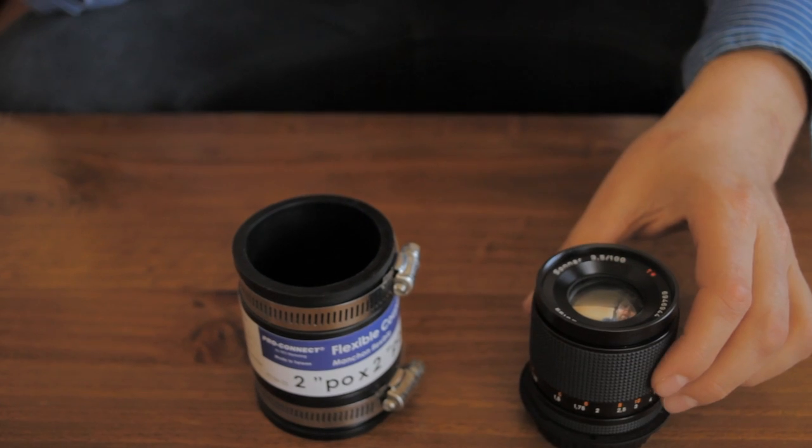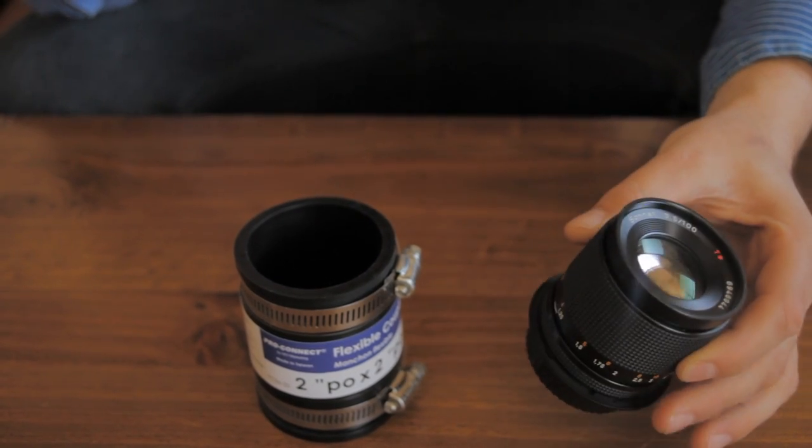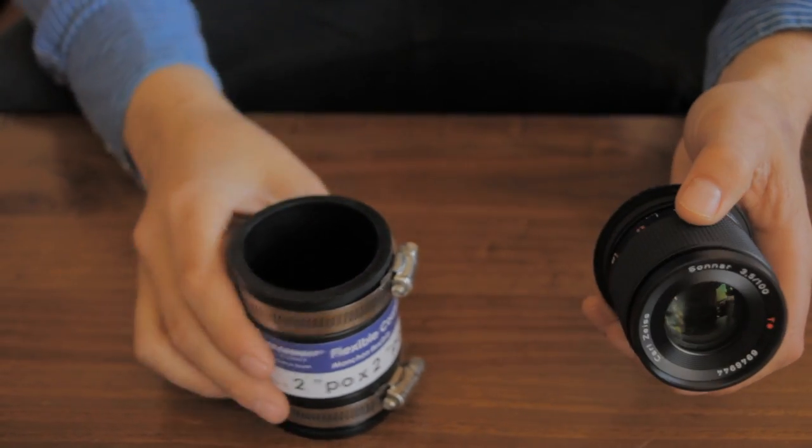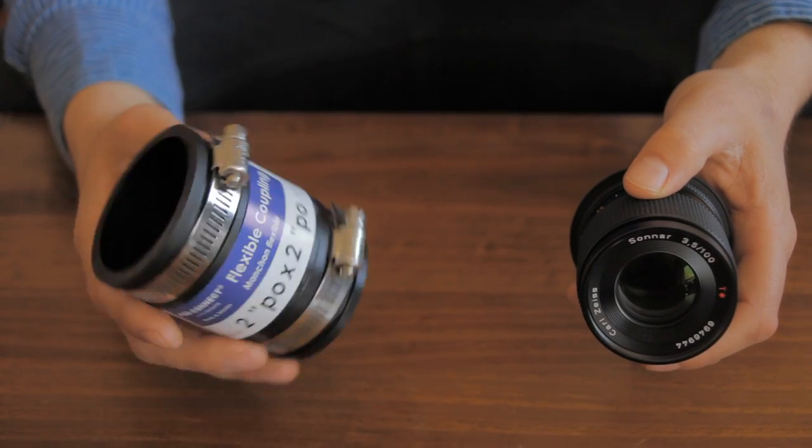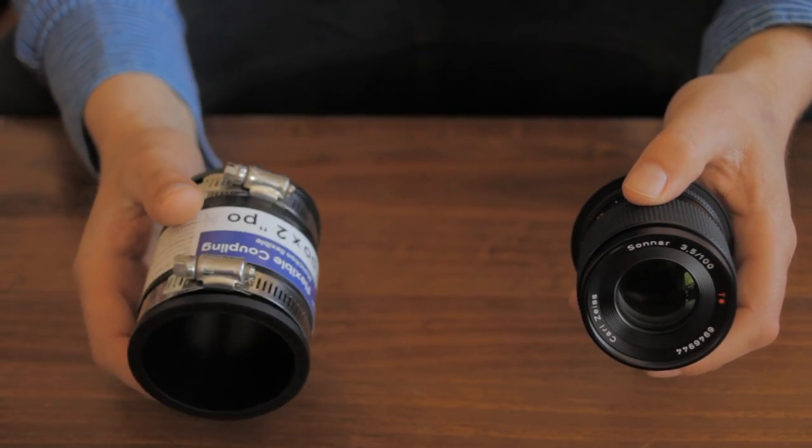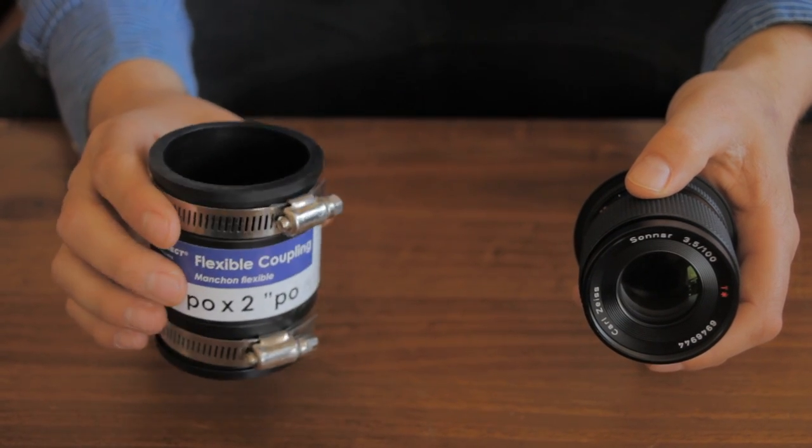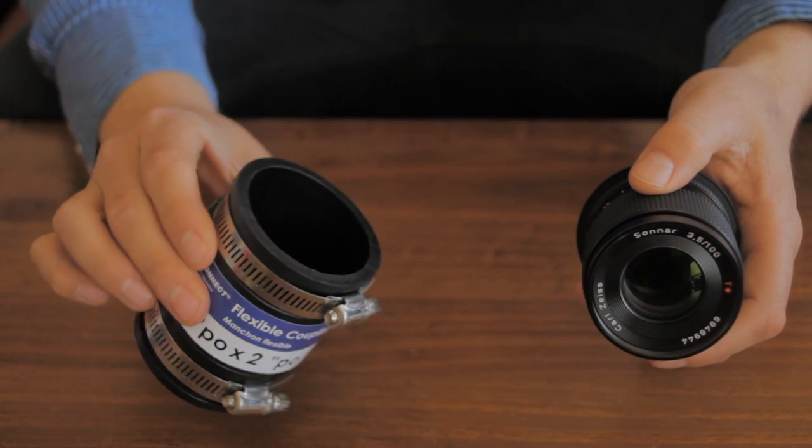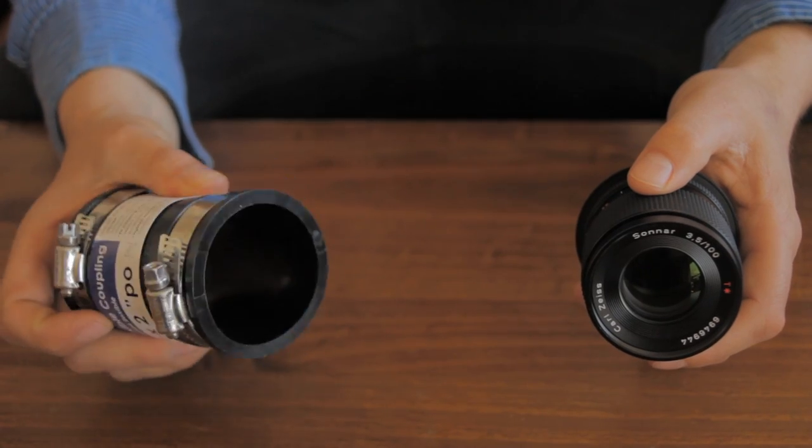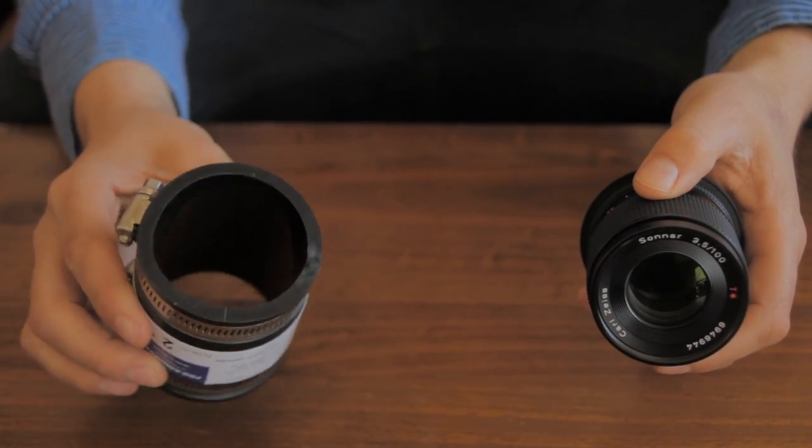So when you're at the hardware store, good idea, take your lens with you. Go to the plumbing section and find where they have these flexible couplings. Like I mentioned earlier, it's just what they use to connect PVC piping or metal piping together. This one is for 2 inch piping.